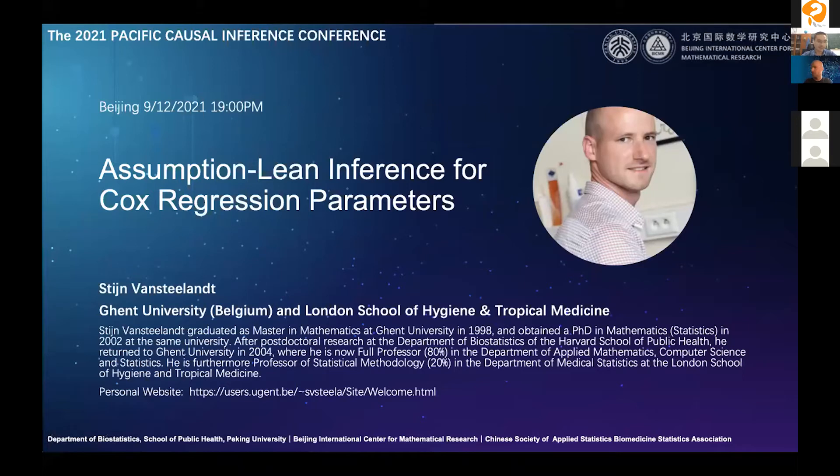So our first speaker is Professor Steen Westland. Let me give a brief introduction to Professor Steen Westland. Steen is a worldwide well-known expert in cognitive inference, missing data analysis, and semi-parametrics. He is currently a professor in Ghent University at the Department of Applied Mathematics and Computer Science and Statistics. He is also jointly affiliated with the Department of Medical Statistics at the London School of Hygiene and Tropical Medicine. Steen graduated as a Master in Mathematics at Ghent University in 1998 and obtained a PhD in Mathematics in 2002. And he used to do postdoc research at Harvard School of Public Health.